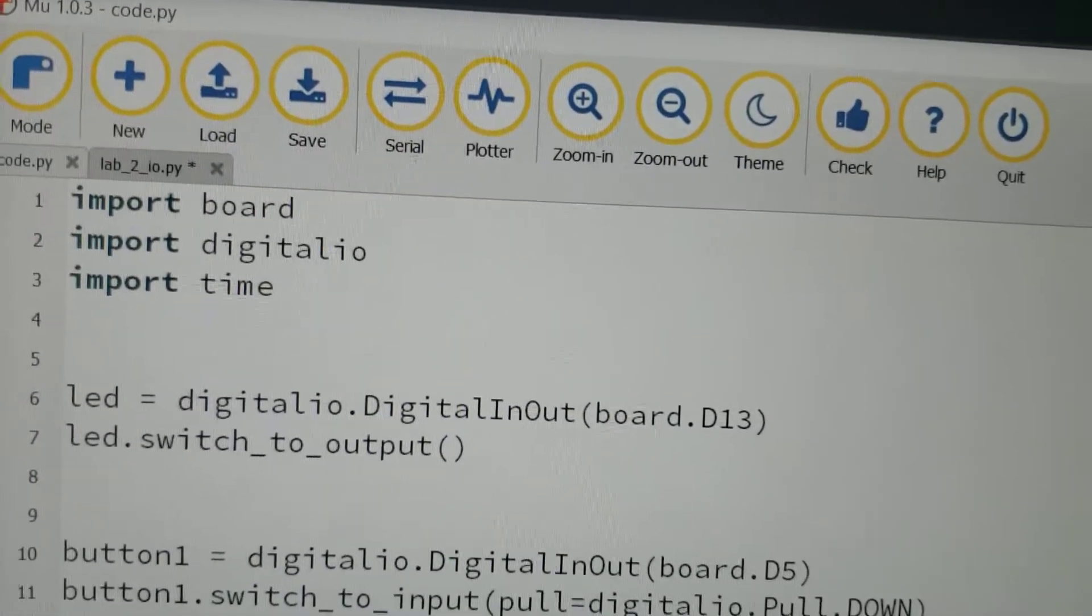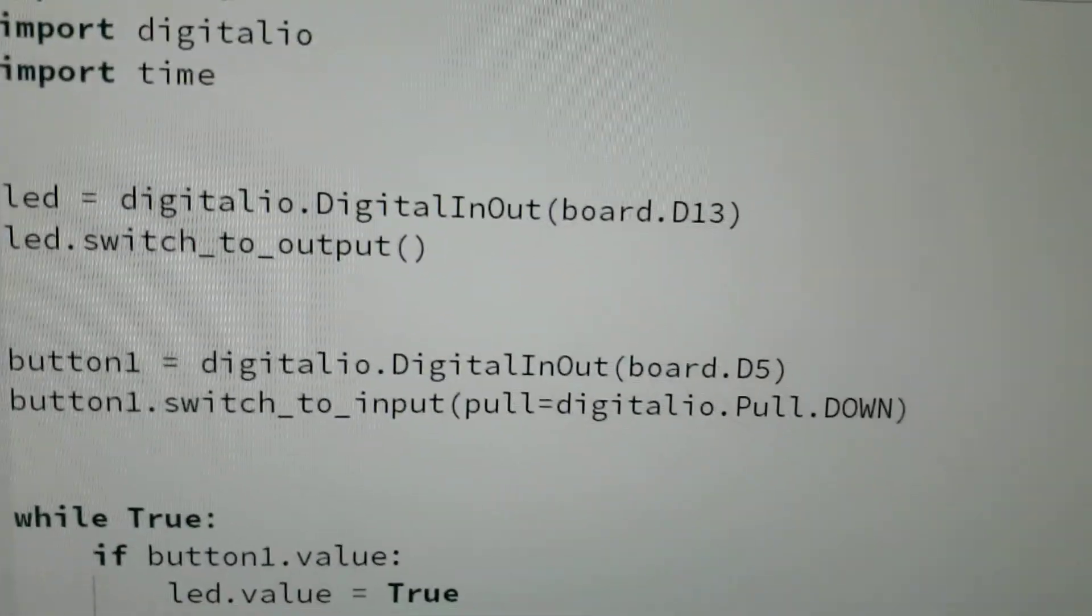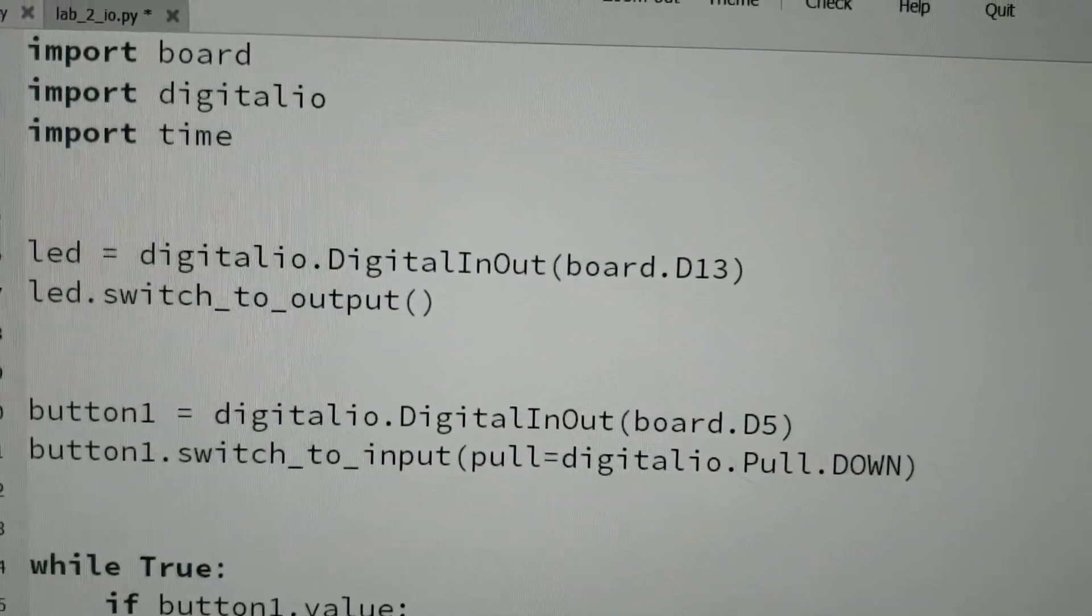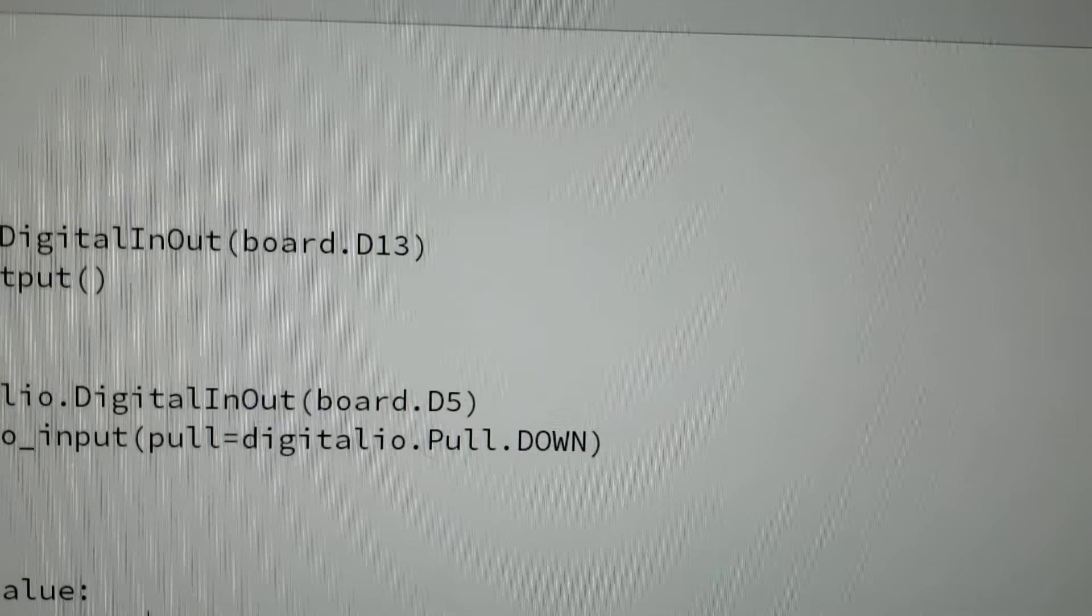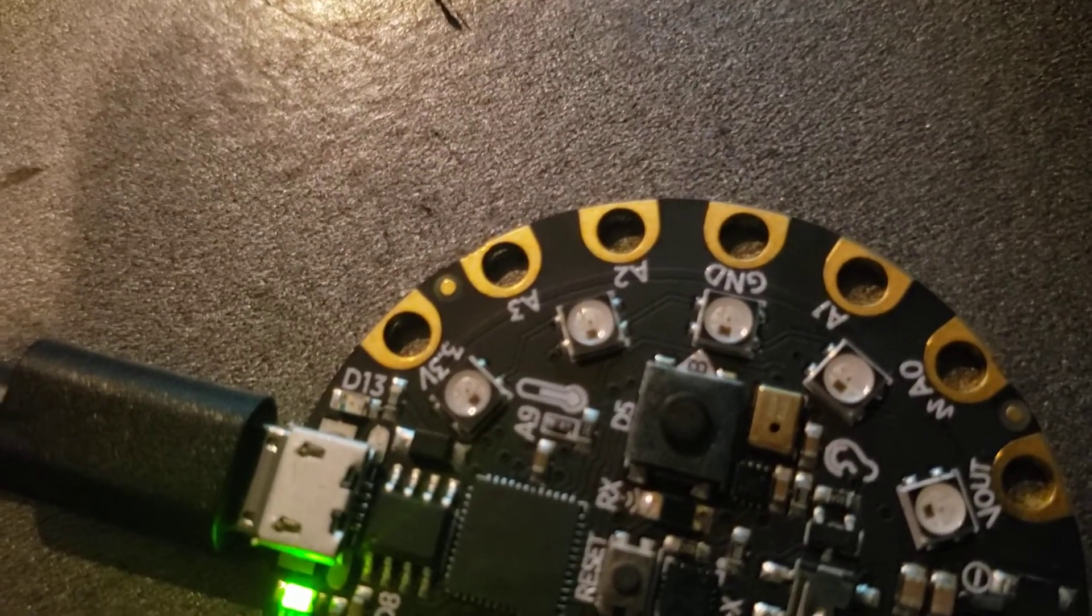And then we've got our variable, which is digitalio.DigitalInOut, and the address is board.D13, so that's the very tiny little red LED, basic as it gets on this board. There it is.